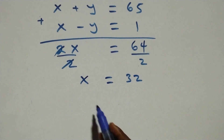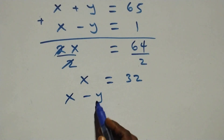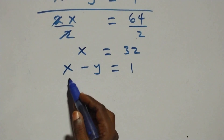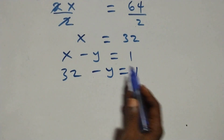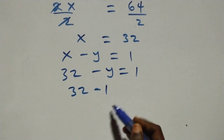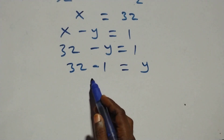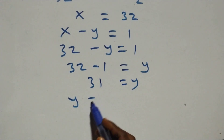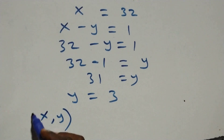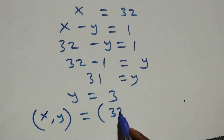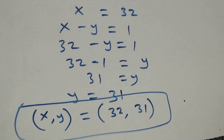Using equation 2, x minus y = 1, with x = 32: 32 minus y = 1, so y = 32 minus 1 = 31. The first solution in the form (x, y) is (32, 31).